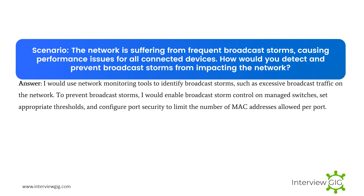The network is suffering from frequent broadcast storms, causing performance issues for all connected devices. How would you detect and prevent broadcast storms from impacting the network? I would use network monitoring tools to identify broadcast storms, such as excessive broadcast traffic on the network. To prevent broadcast storms, I would enable broadcast storm control on managed switches, set appropriate thresholds, and configure port security to limit the number of MAC addresses allowed per port.